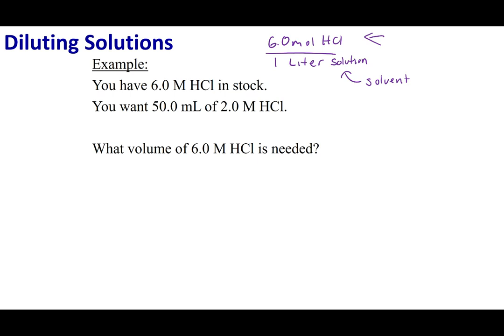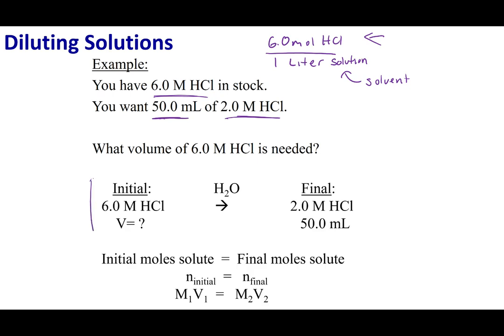So let's go ahead and think about this thought experiment. Let's say I go to my chemical stock room, and I have a 6 molar solution of HCl. This is my stock solution. However, I only want a 2 molar solution of HCl, but I need 50 mils of it. So what I have to ask myself is how much water do I add to this 6 molar of HCl? So here are my initial conditions, and here's the solution I want to finally make.